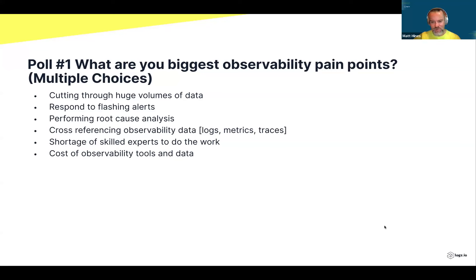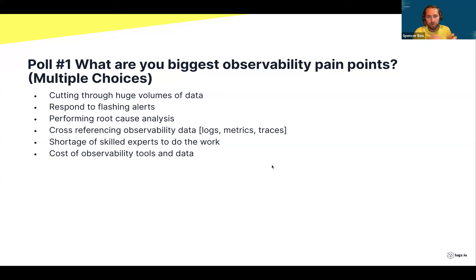Moving on — the poll results reflect what Spencer sees in his customer interactions: getting to the root of the problem and understanding how systems communicate with each other is primary. This aligns exactly with what customers are saying. Poll results confirm that bringing the data together to perform root cause analysis is the core challenge.